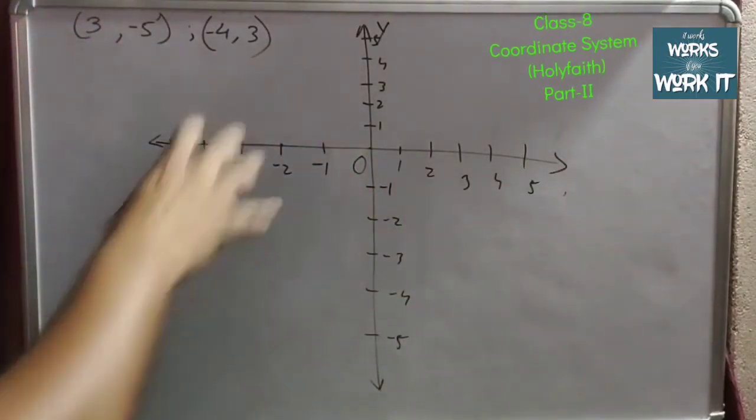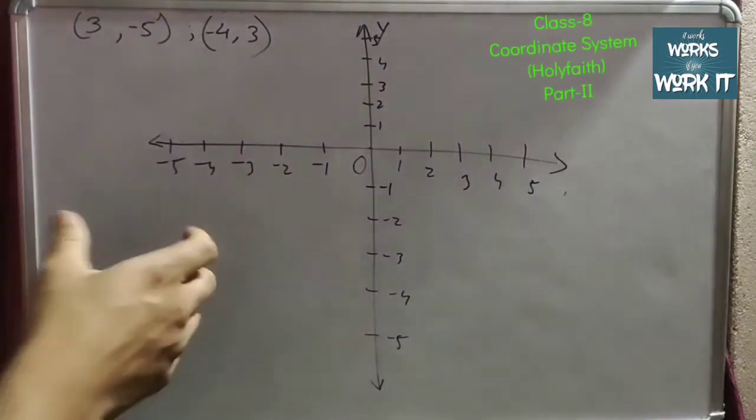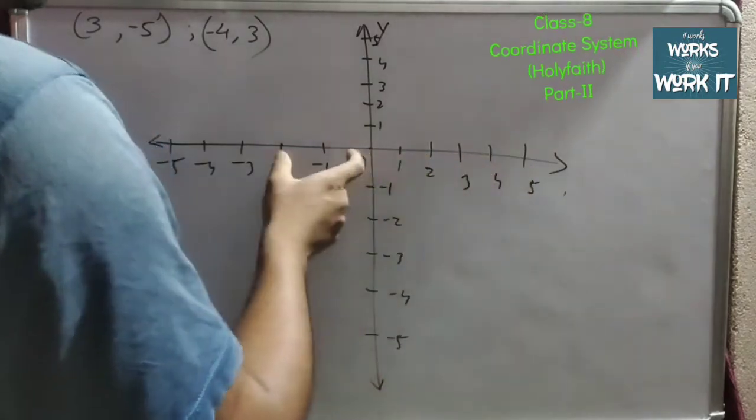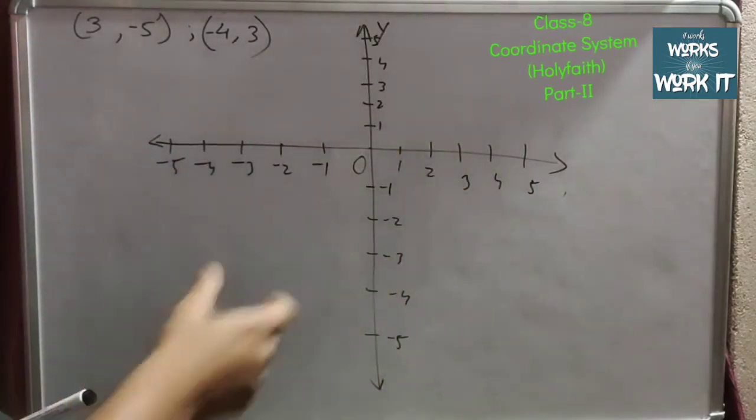Generally we do these things in graph paper in order to have equal distance between the points. I have written here in the x-axis and y-axis.